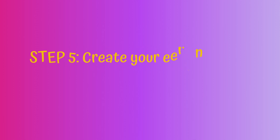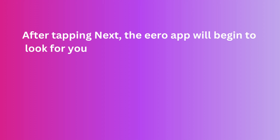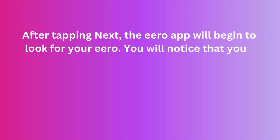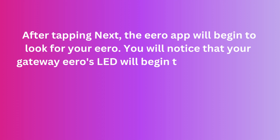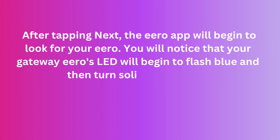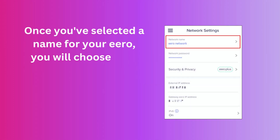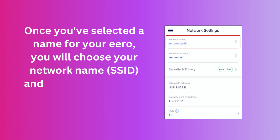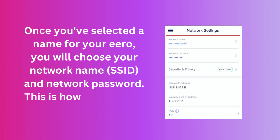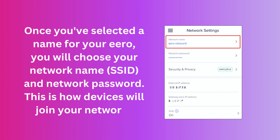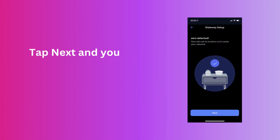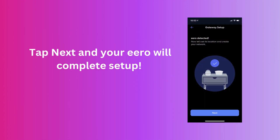Step 5: Create your Eero network. After tapping Next, the Eero app will begin to look for your Eero. You will notice that your gateway Eero's LED will begin to flash blue and then turn solid once found. Once you've selected a name for your Eero, you will choose your network name (SSID) and network password. This is how devices will join your network. Tap Next and your Eero will complete setup.